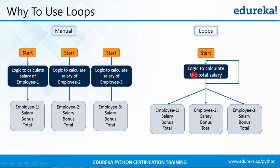Another way is to write the logic to calculate the salary and keep on iterating that logic for the total number of employees. When the loop runs once it prints the salary of the first employee, when it runs a second time it prints the salary of the second employee, and so on. The major advantage here is we only need to write one logic and repeat it for all employees, which reduces code size, reduces complexity, improves efficiency, and increases speed of execution.